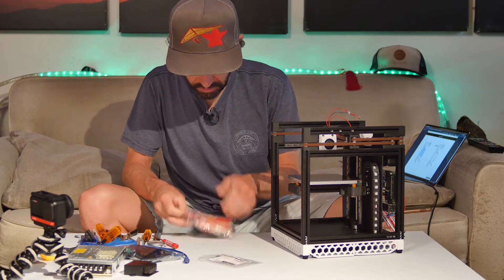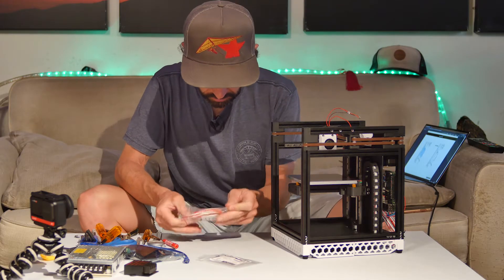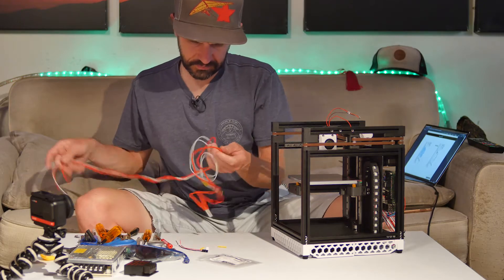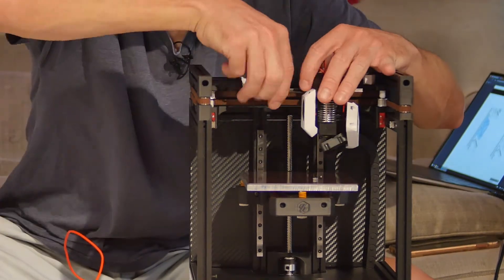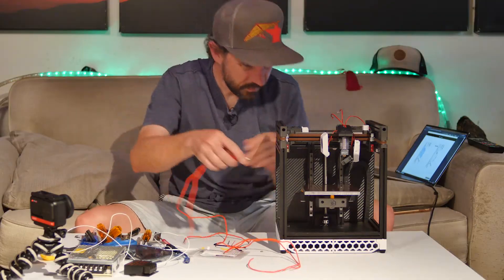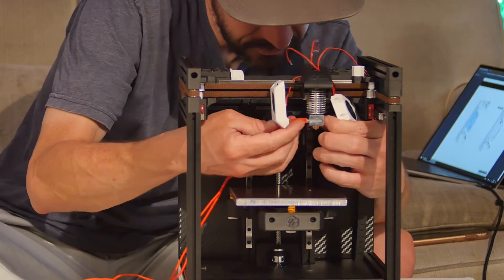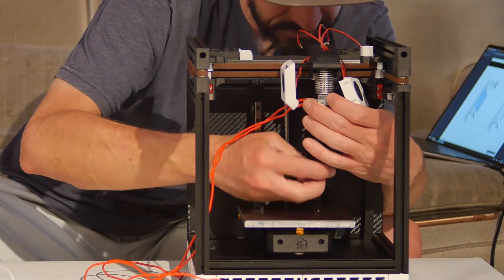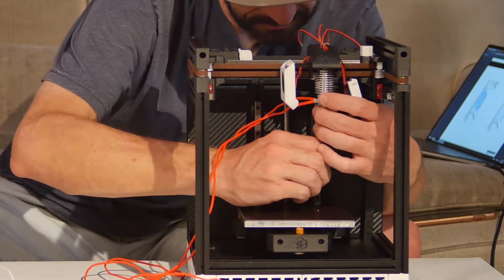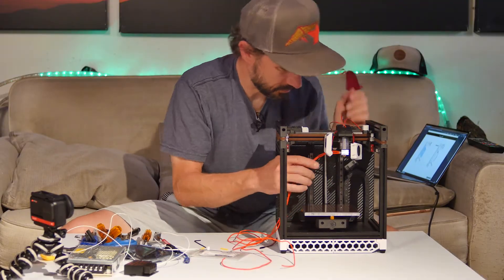Heat cartridge through there. Now I'm installing the tool head heater and thermistor. There's kind of just a bunch of miscellaneous little things to assemble at this point, so I'm just putting together whatever I can.